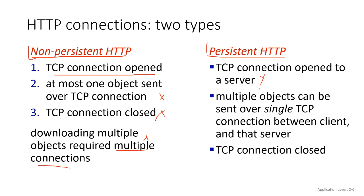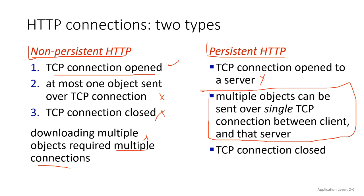A persistent HTTP connection means you open the TCP connection and can send multiple objects within that same connection. After you're done with all your transfers, then the connection closes. Both types are useful — sometimes you only want one object sent, and other times you want multiple objects sent at once.